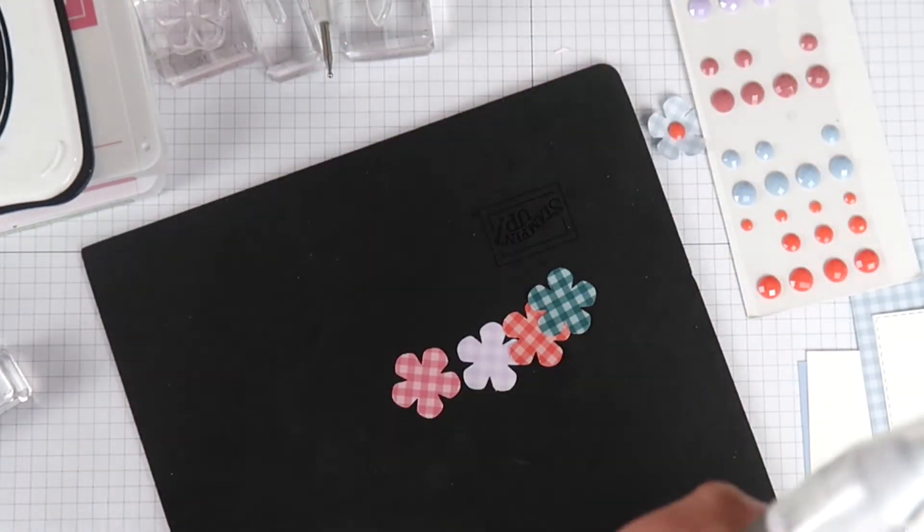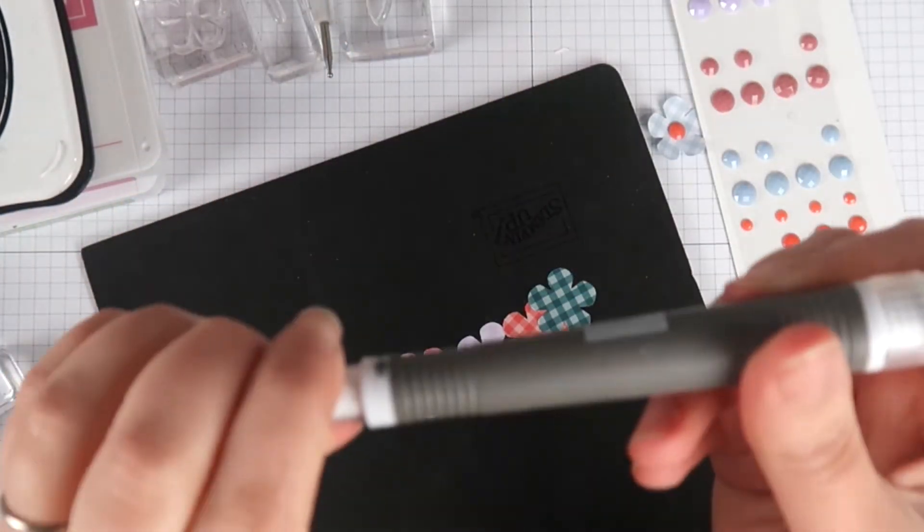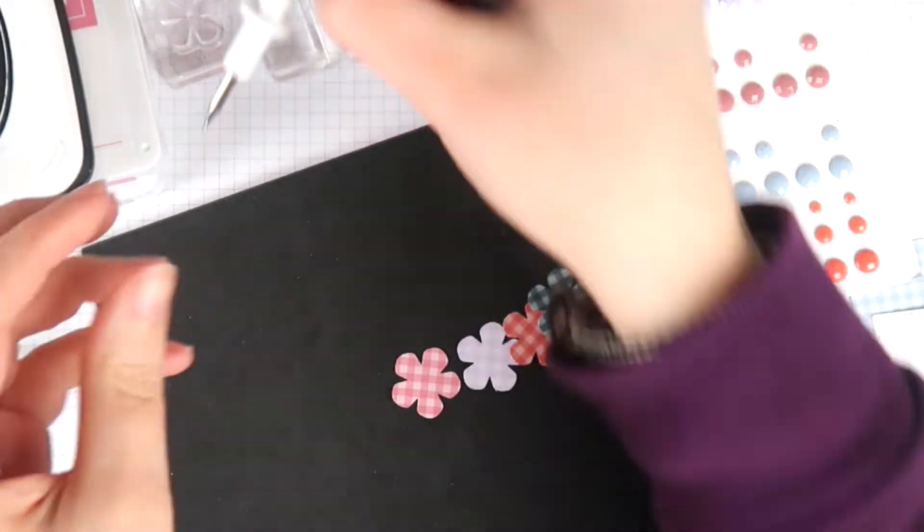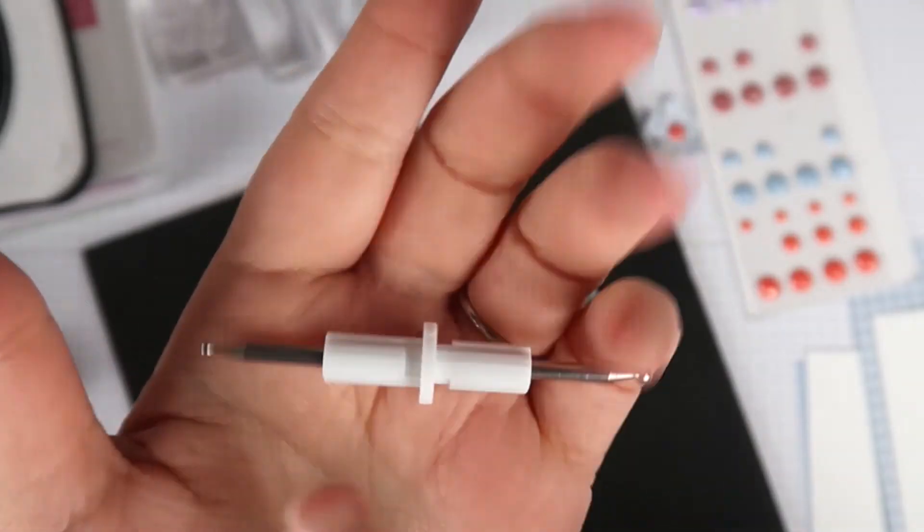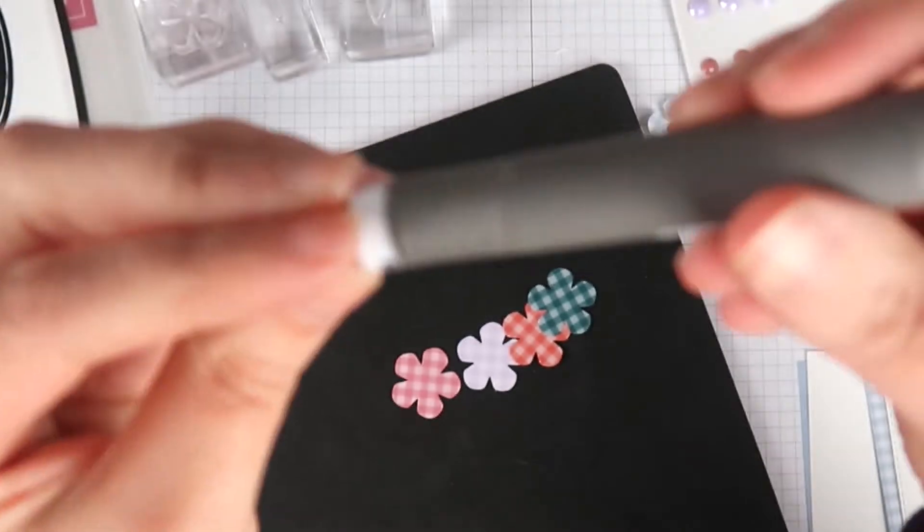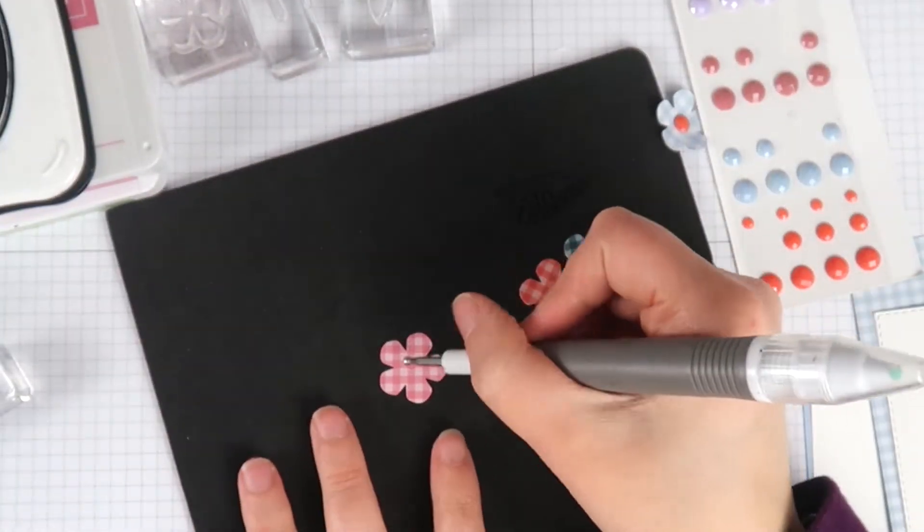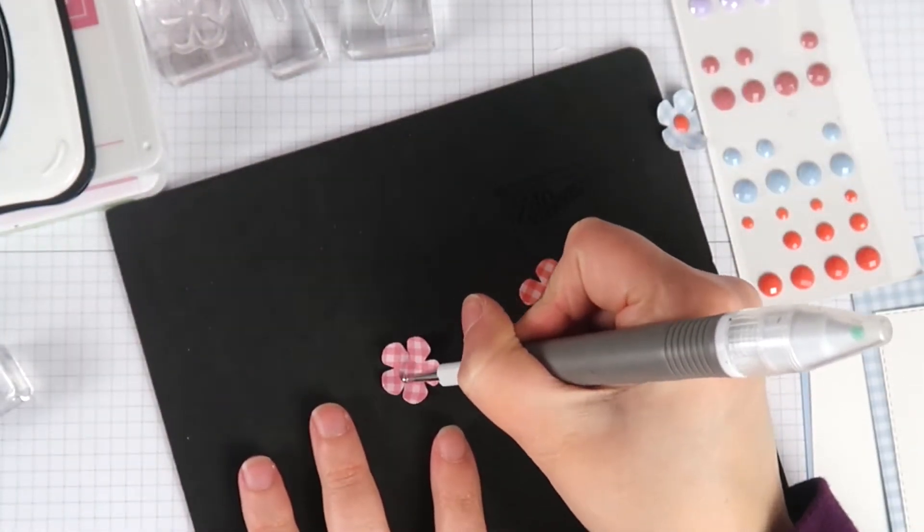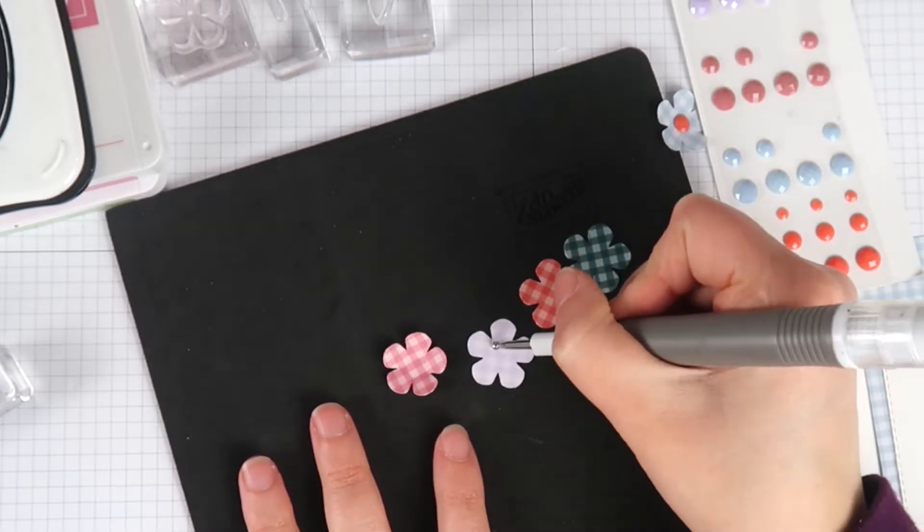To make my flowers kind of pop up the way I did, I'm gonna be using my Take Your Pick tool from Stampin' Up. I'm gonna be using the stylus insert for my tool there. I'm using the bigger ball on the stylus and I'm just gonna go in the center of my flowers and take my stylus.